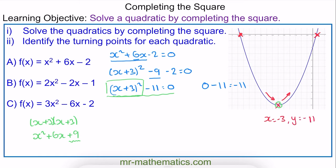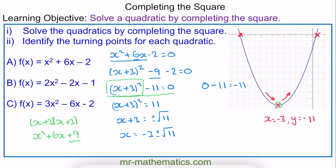Continuing to make x the subject of this equation, we'll add 11 to both sides, giving x plus 3 all squared equals 11. Taking the square root of both sides, x plus 3 is plus or minus the square root of 11. Therefore x equals minus 3 plus or minus root 11. So the two roots are x equals minus 3 take away root 11, and x equals minus 3 plus root 11. Here we have found the two roots and the coordinate of the turning point, all by completing the square.